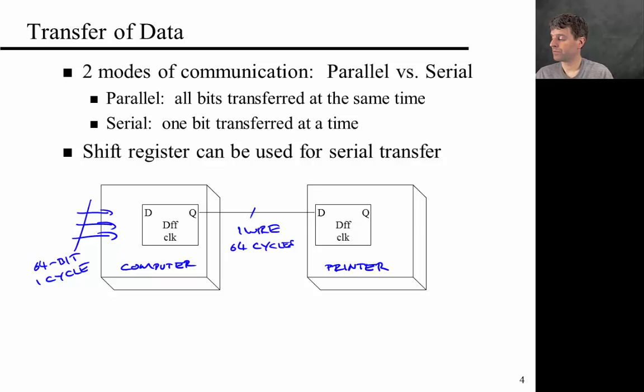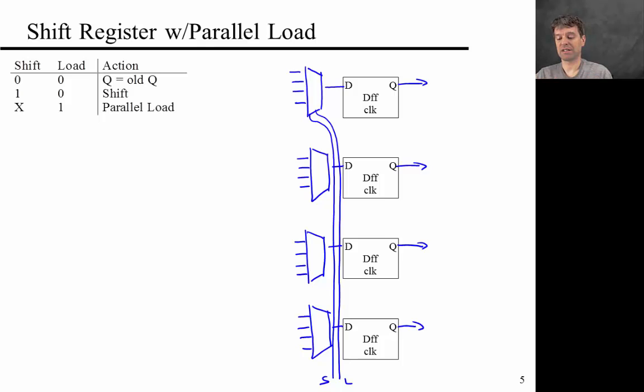But if you want to do both, so you have parallel and serial modes, what you need is essentially a shift register with parallel load, and I've sort of pre-drawn a little bit of this here. So the idea now is that again, it's a controlled register where all the registers here are hooked up to the same controls. All the multiplexers here are hooked up to the same controls, now called shift and load.